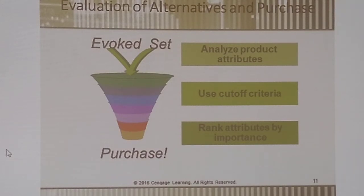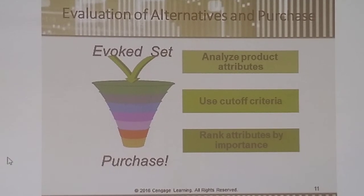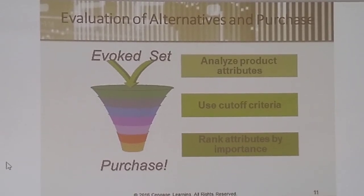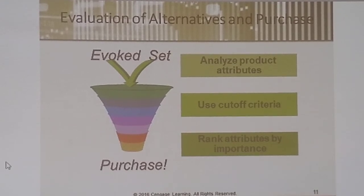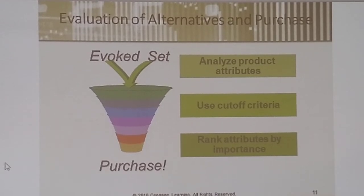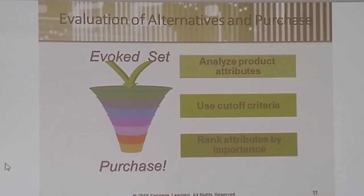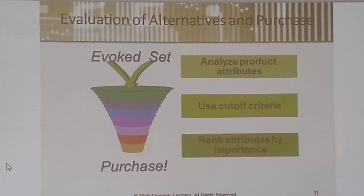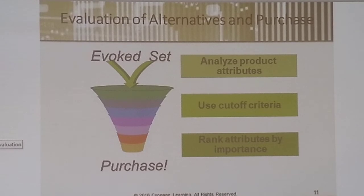Evaluation of alternatives and purchase: that evoked set is the set of information we got from our search. We're going to analyze the product's attributes — I like these shoes, I like the way they buckle, I like the fact that they're Mary Janes or T-straps and have a heel. The cutoff criteria: I don't want shoes like this, or I don't want a price over this amount — I won't pay over $75 for a pair of shoes. Then you rank the attributes by importance: is it style, cost, or utility and comfort? You put that evoked set into the process and come out with a purchase — or you may make a decision not to purchase, which in itself is a choice.